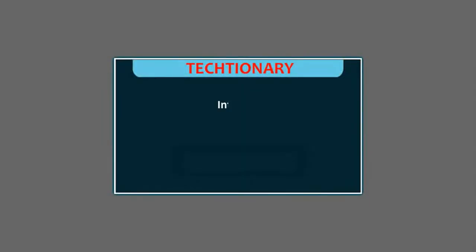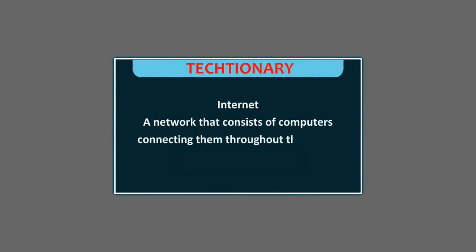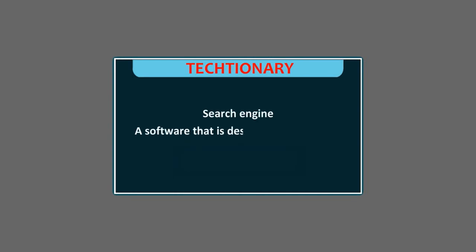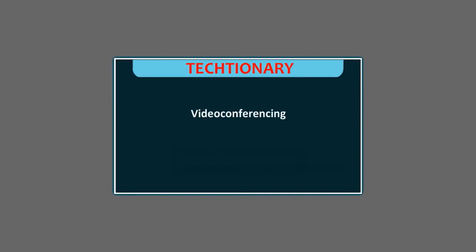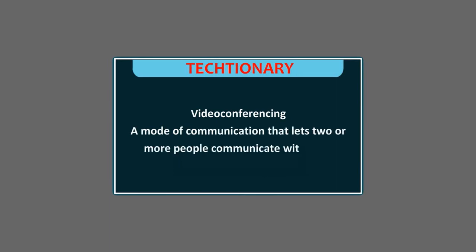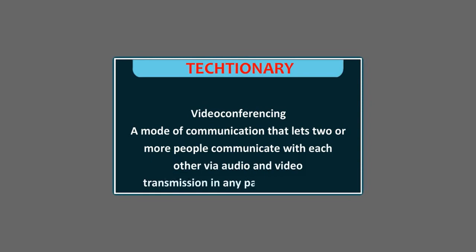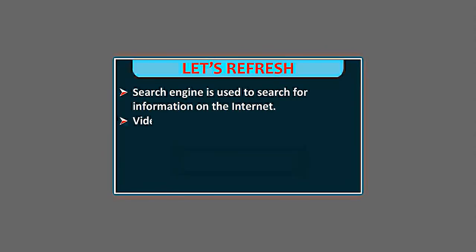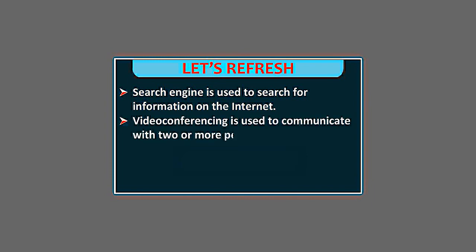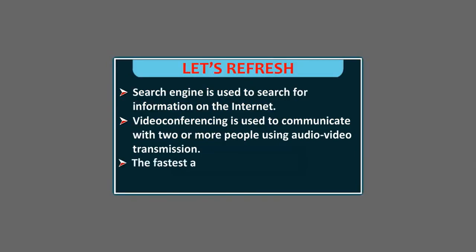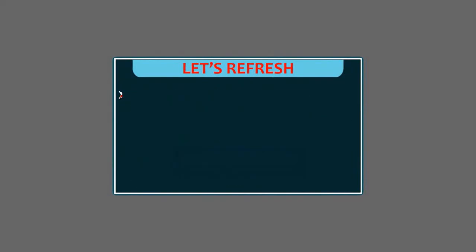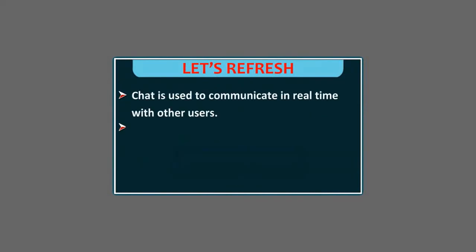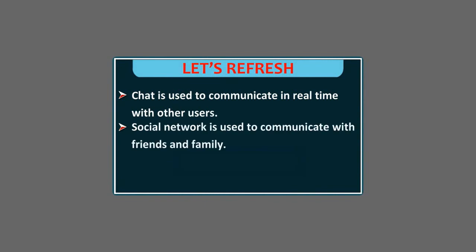Glossary. Internet: A network that consists of computers connecting them throughout the world. Search Engine: Software that is designed to search web pages for information on a specified topic. Video Conferencing: A mode of communication that lets two or more people communicate with each other via audio and video transmission in any part of the world. Let's refresh: Search engine is used to search for information on the internet. Video conferencing is used to communicate with two or more people using audio-video transmission. The fastest and most common way to send messages is email. Chat is used to communicate in real time with other users. Social network is used to communicate with friends and family. Adequate precautions should be maintained while using the internet.